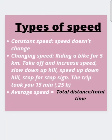There are two types of speed: constant speed and changing speed. Constant speed is speed that doesn't change. Changing speed, as obvious from the name, changes over time. For example, riding a bike for 5 km — you take off and increase speed, slow down uphill, speed up downhill, and stop for a stop sign. The trip took 15 minutes. Average speed is equal to total distance divided by total time.